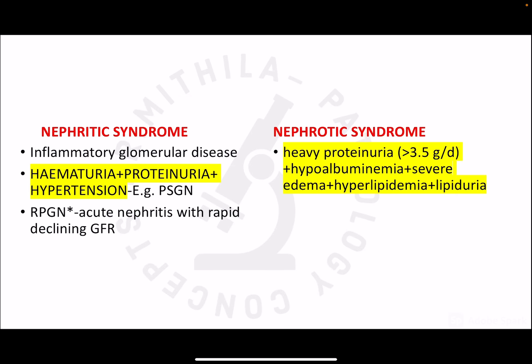Nephritic and nephrotic syndromes are very important clinical syndromes seen in a number of glomerular diseases — both primary glomerular diseases and secondary systemic diseases like diabetes, hypertension, or amyloidosis. Inflammatory glomerular diseases manifest as nephritic syndrome, which features hematuria, proteinuria, and hypertension. An example is post-streptococcal glomerulonephritis. Another example is rapidly progressive glomerulonephritis, in which there is acute nephritic syndrome along with rapid decline in GFR.